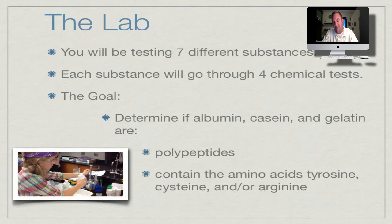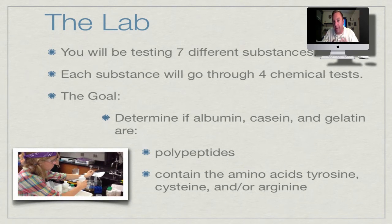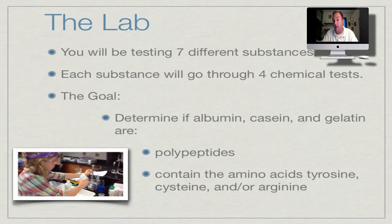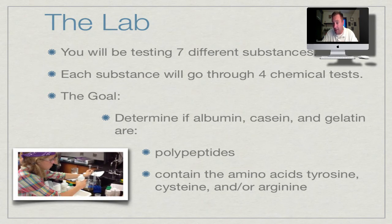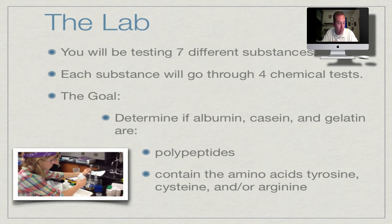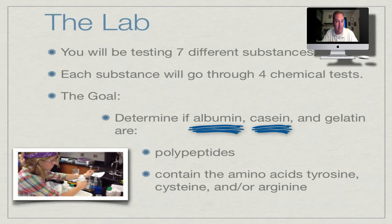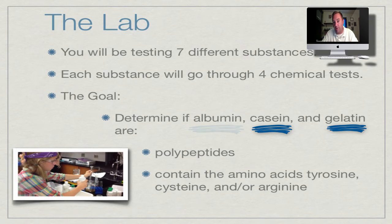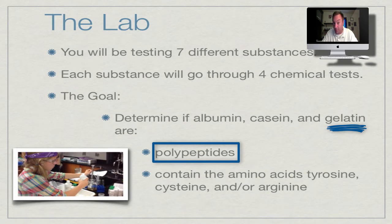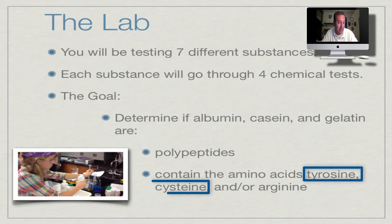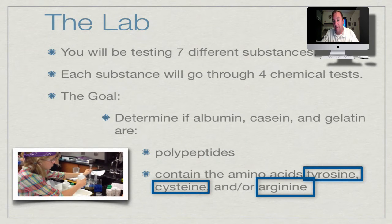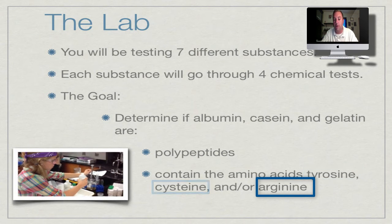This lab involves seven substances. Three of them are known controls, three are the ones we're actually testing, and the seventh is water used as a negative control. Each substance will go through four separate chemical tests. The goal is to determine if albumin (egg whites), casein (a protein in milk), and gelatin (found in jello) are polypeptides, and whether they contain three particular amino acids: tyrosine, cysteine, and arginine. One test identifies polypeptides; the other three target each individual amino acid.